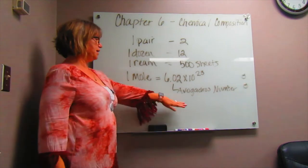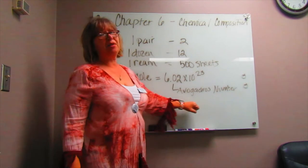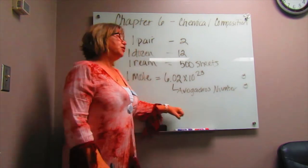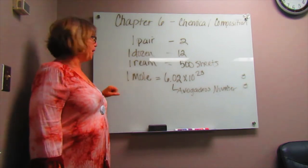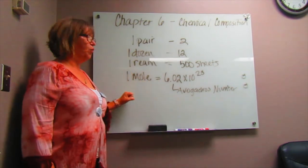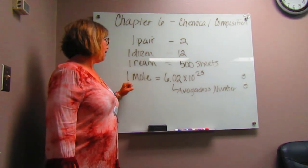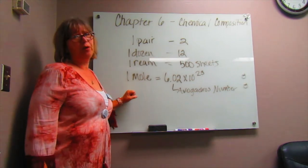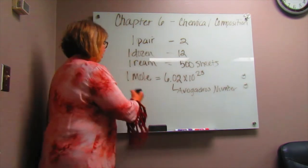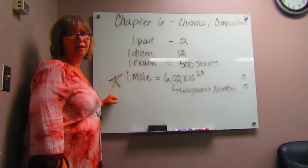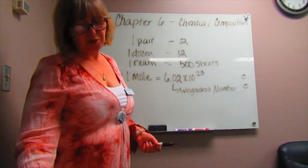One mole equals 6.02 times 10 to the 23rd, which is Avogadro's number. When your intro chem professor starts talking about moles and Avogadro's number, you'll already be one step ahead. This is something we're going to be referring to from now to the end of the semester, so you definitely need to know this — learn it, live it, love it.